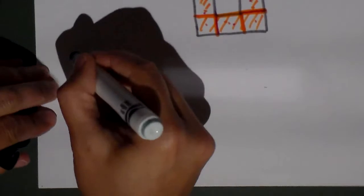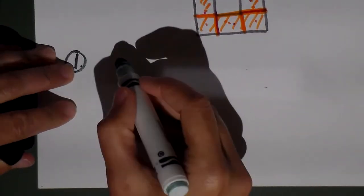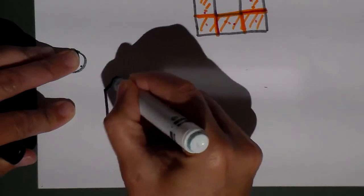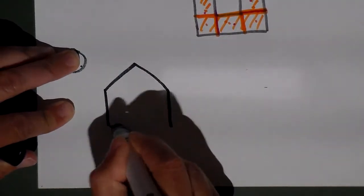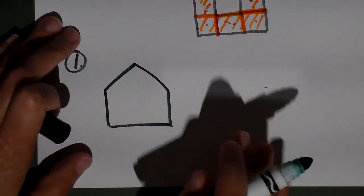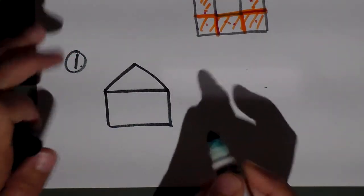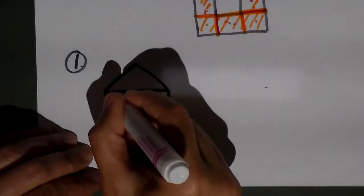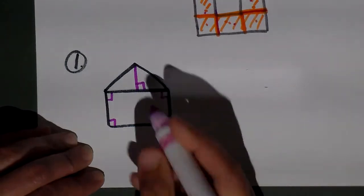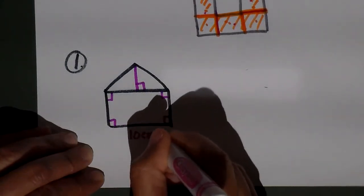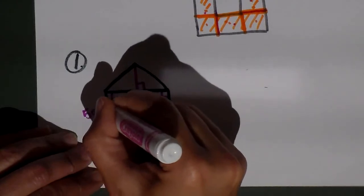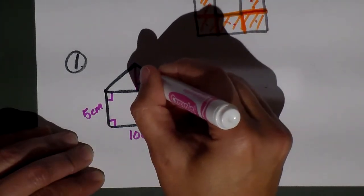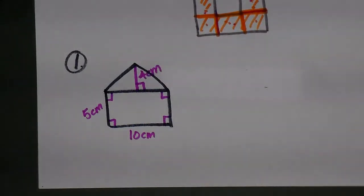For our first example with composite figures, let's do the house shape. We'll divide it into a triangle and a rectangle. Let's say the base is 10 centimeters, the height of the rectangle is 5 centimeters, and the height of the triangle is 4 centimeters. How do I find the area of that figure?